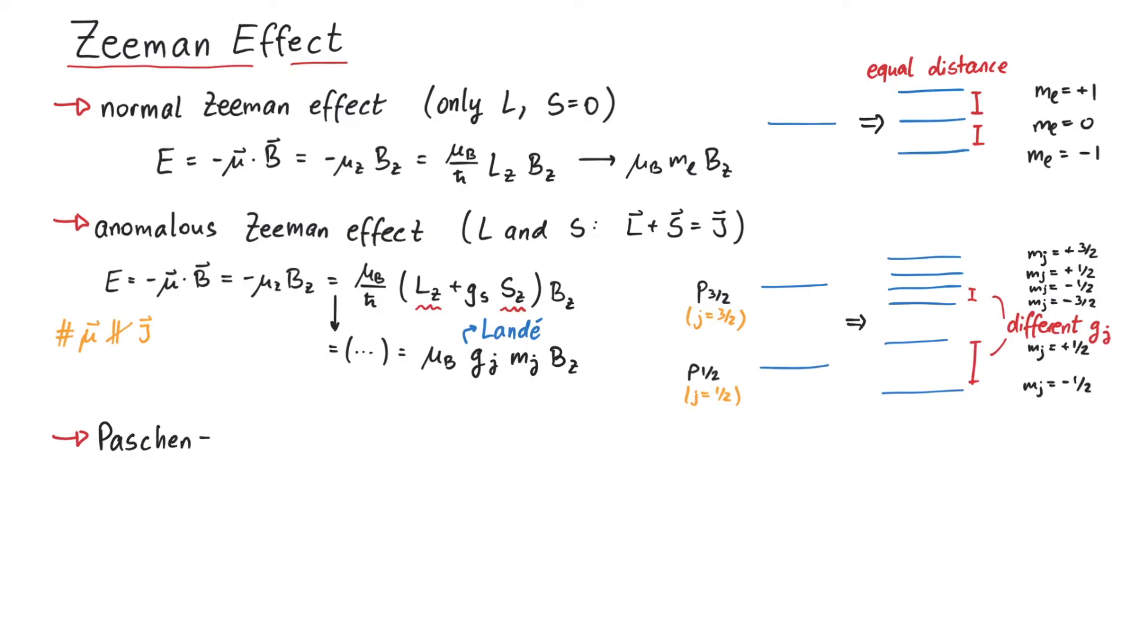Finally, let us talk about the Paschen-Back effect. This is a special case of the anomalous Zeeman effect, where the magnetic field gets so strong that l and s decouple again and interact independently with the magnetic field.